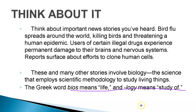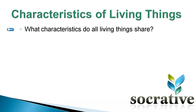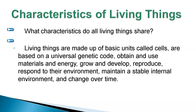So what characteristics do all living things possess? First off, living things are made up of cells. Secondly, we have a universal genetic code — universal means all life shares it. This is DNA. Living things obtain and use materials and energy.